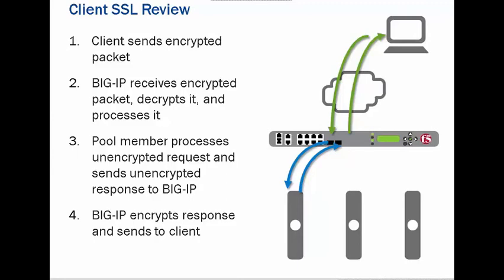If you have created a server-side SSL profile, then F5 uses that profile to re-encrypt the traffic and send it to the pool member. That means traffic from client to BIG-IP comes encrypted, BIG-IP decrypts it, and then BIG-IP uses the server-side SSL profile to re-encrypt it. The re-encrypted packet is sent to the pool members. The pool member receives encrypted traffic, decrypts it, processes it, re-encrypts it, and sends it back to F5. Then BIG-IP uses the client-side SSL profile to re-encrypt it again and send it to the client.